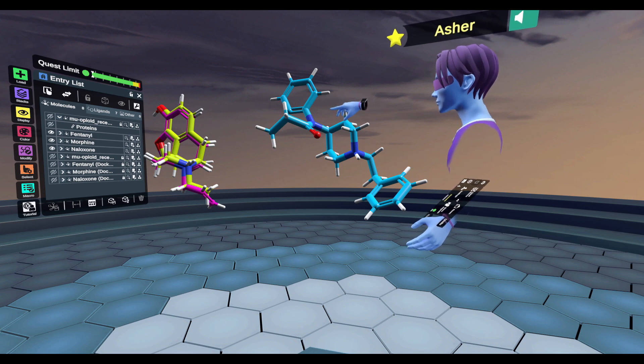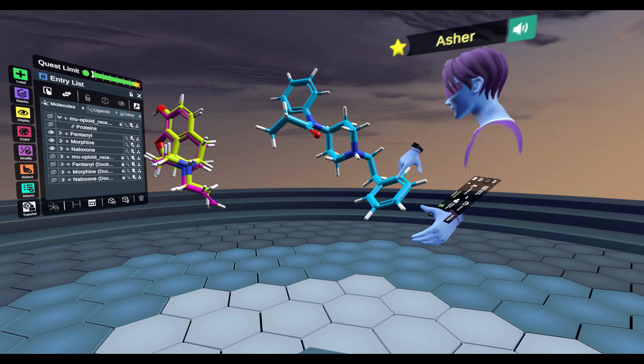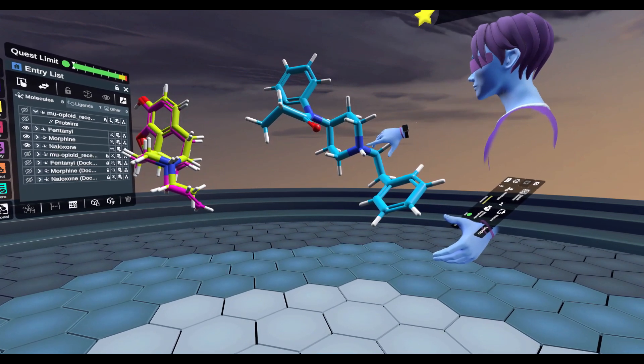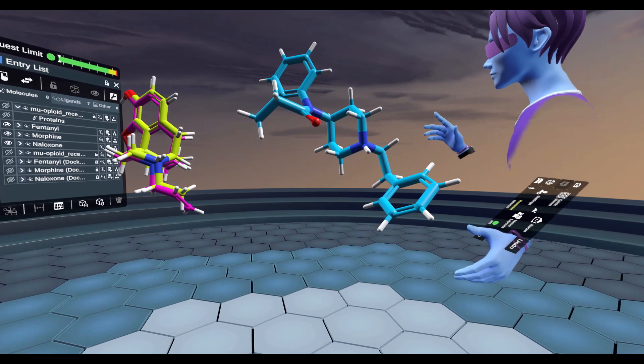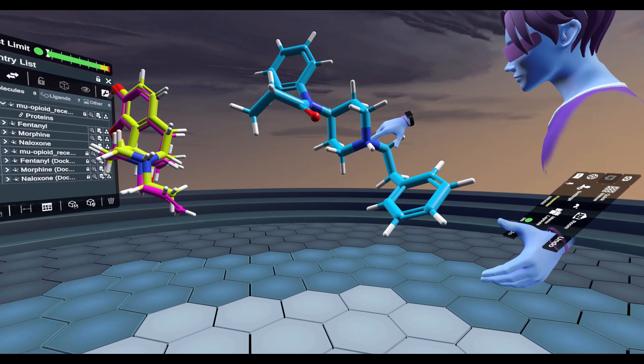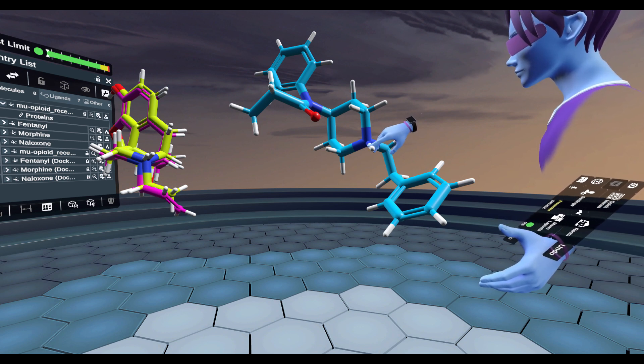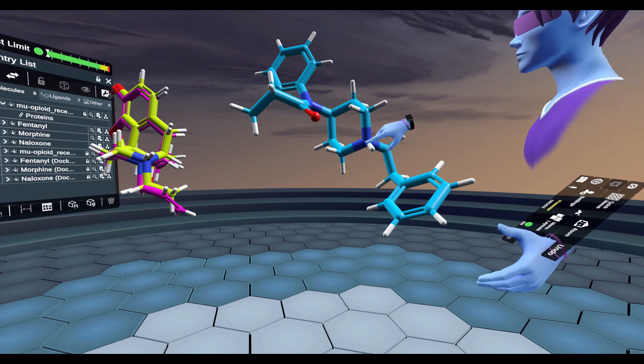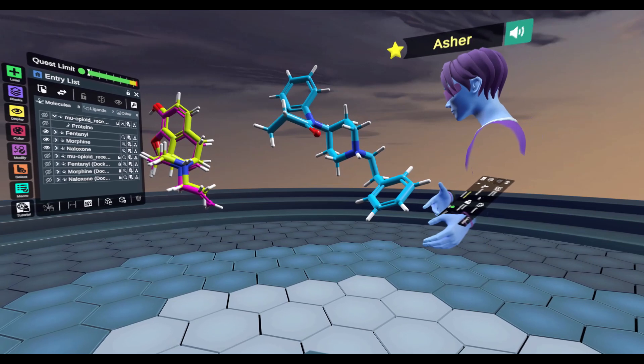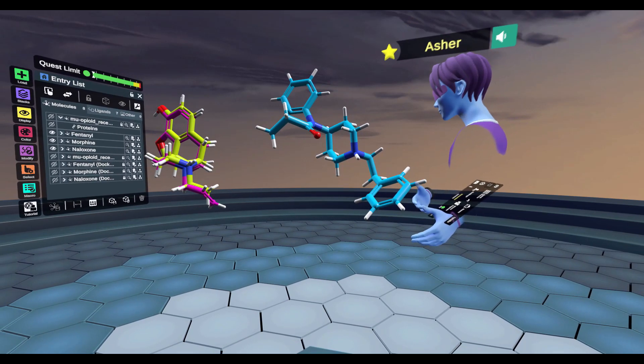And I think the interesting thing to notice between fentanyl versus morphine and naloxone is actually the structure of fentanyl is quite different. The fentanyl compound is actually a much different scaffold. The only similarity I actually noticed between these compounds is actually this quaternary nitrogen, this protonated nitrogen with the hydrogen that exists in both of the structures. Other than that, I wouldn't say these compounds are very similar. So I find it quite fascinating that fentanyl even binds to opioid receptors.